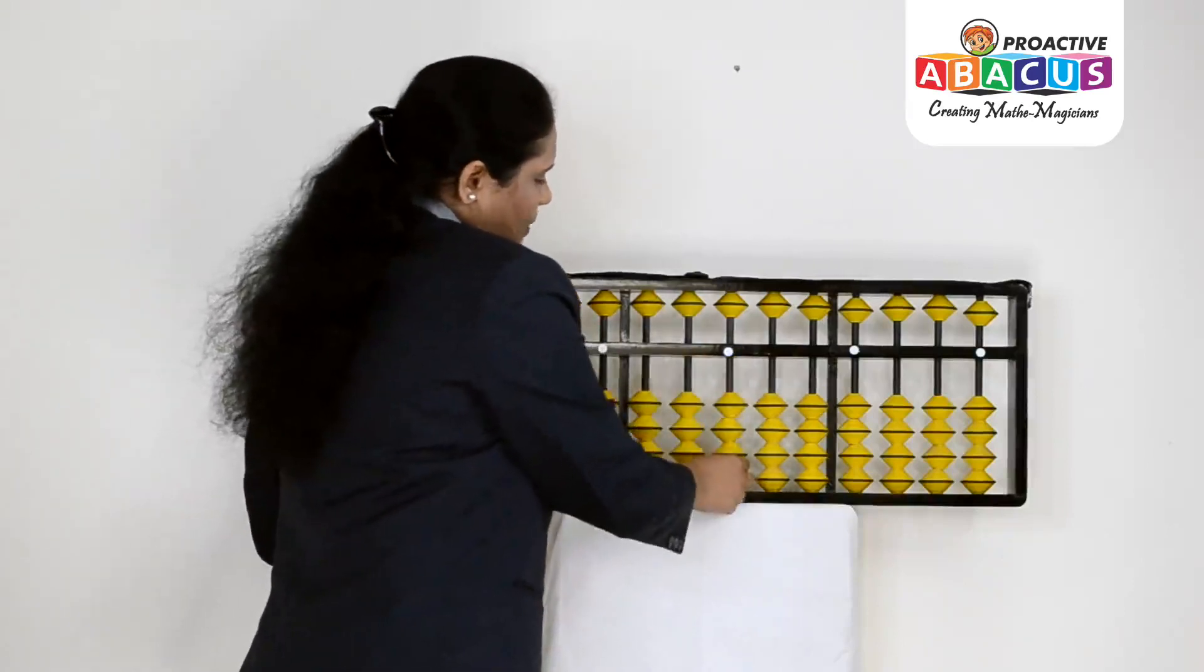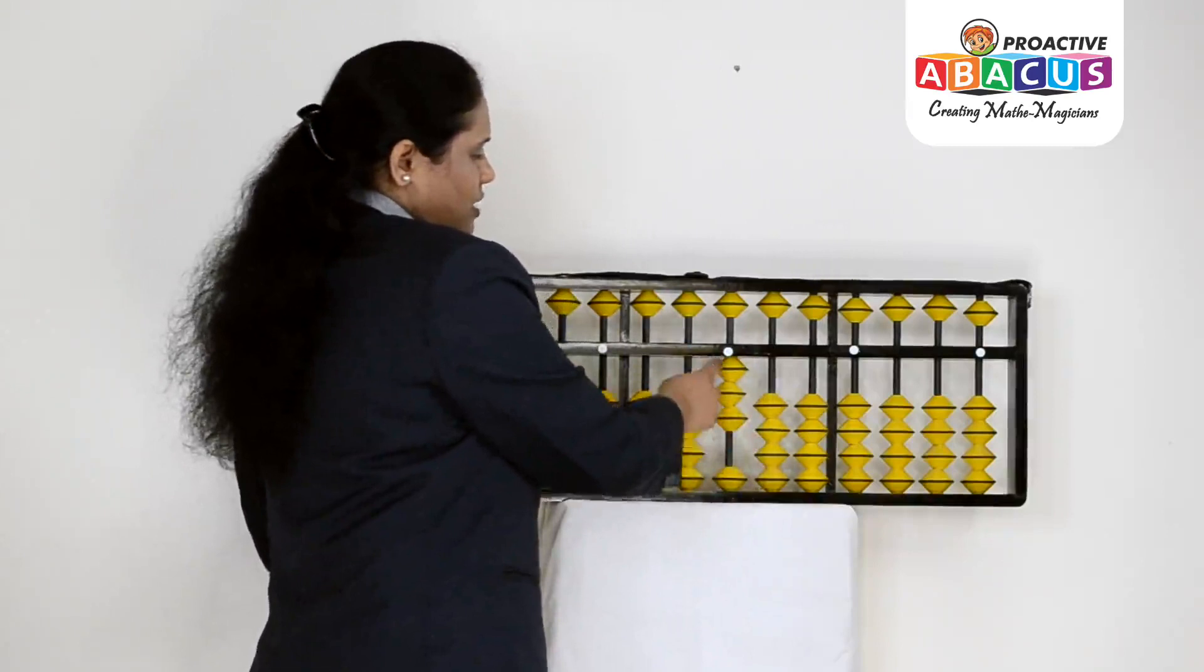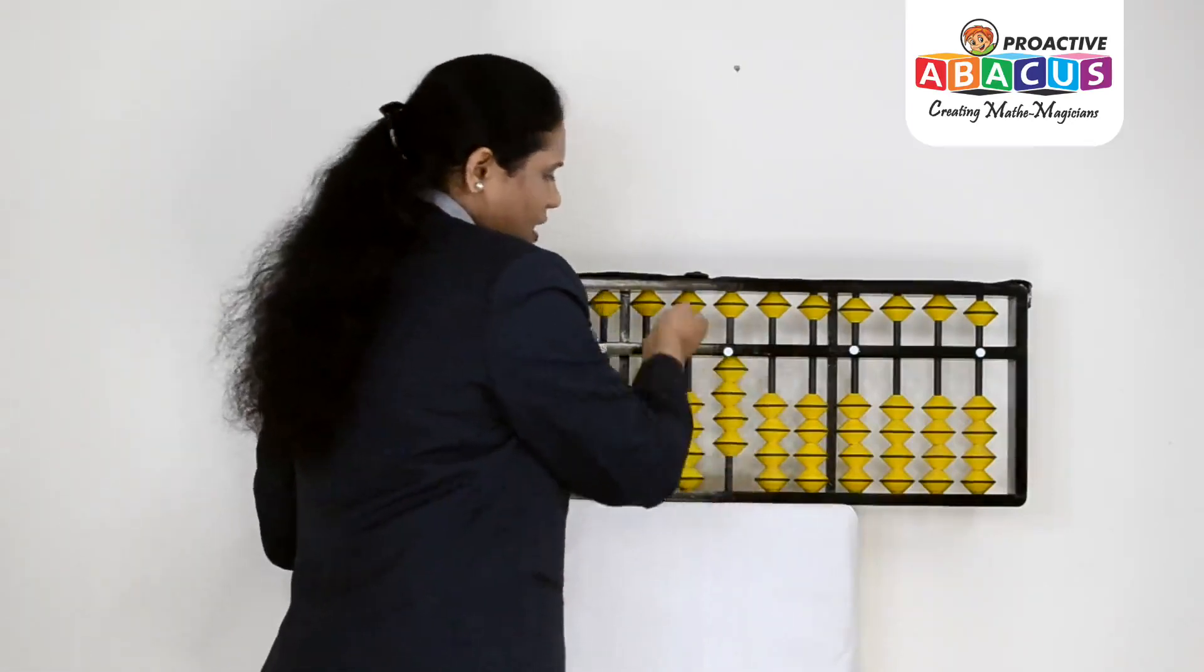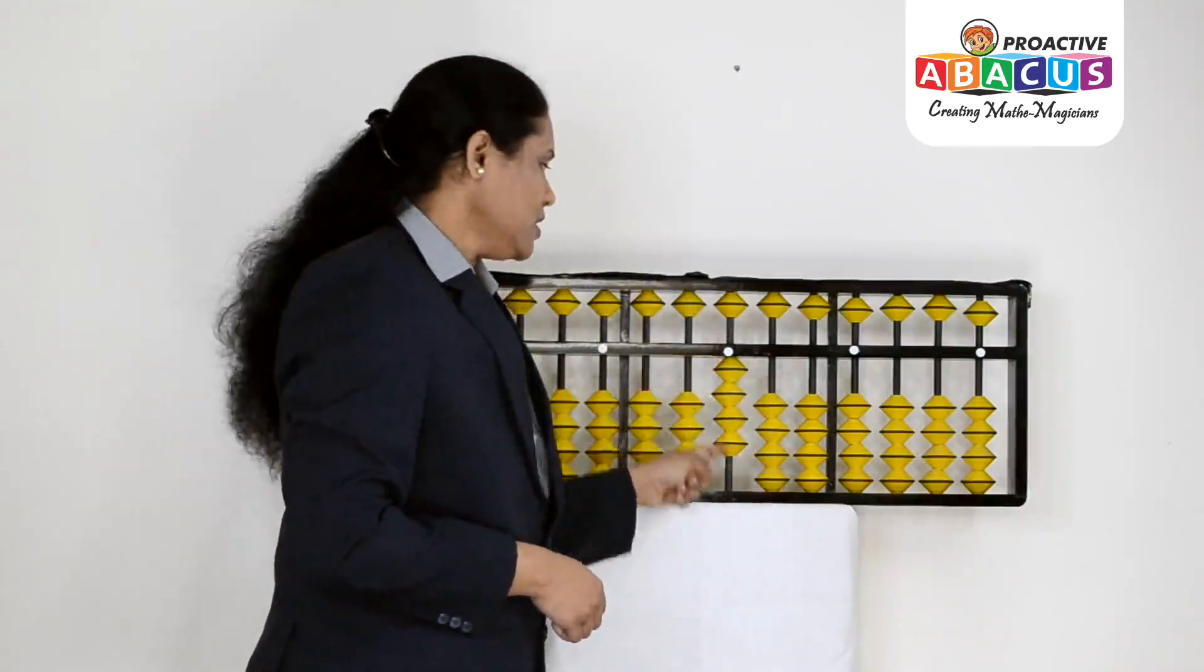The three beads touching is 3. The four beads touching the horizontal bar is 4.